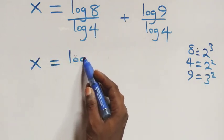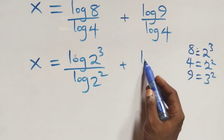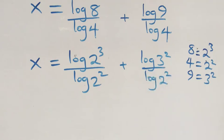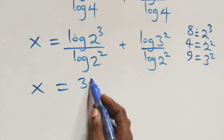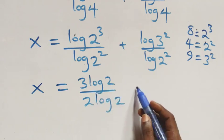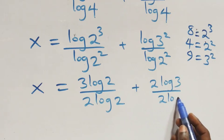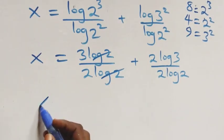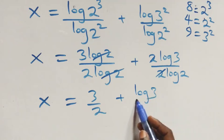What we have here becomes x equals to log two raised to power three over log two squared, plus log three squared over log two squared. Here we apply the power law of logarithms, giving x equals to three log two over two log two, plus two log three over two log two. Log two cancels each other, leaving three over two, and two cancels leaving log three over log two.